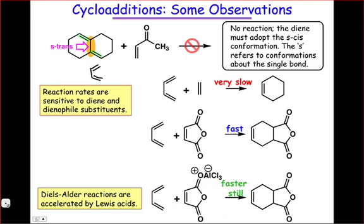The S-trans diene is unreactive in the Diels-Alder reaction. So the diene must be present in the S-cis form in order to react in the Diels-Alder reaction.